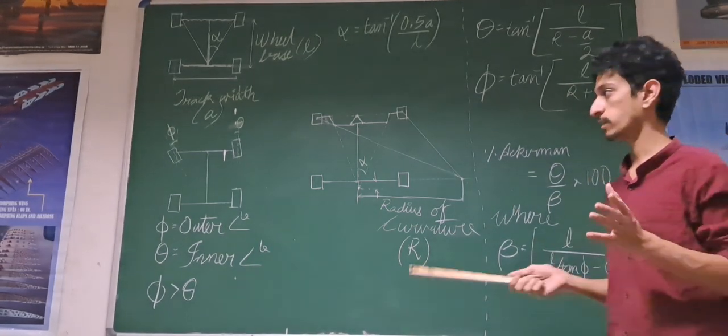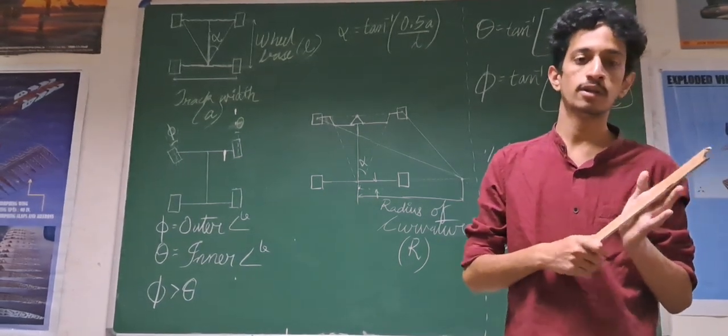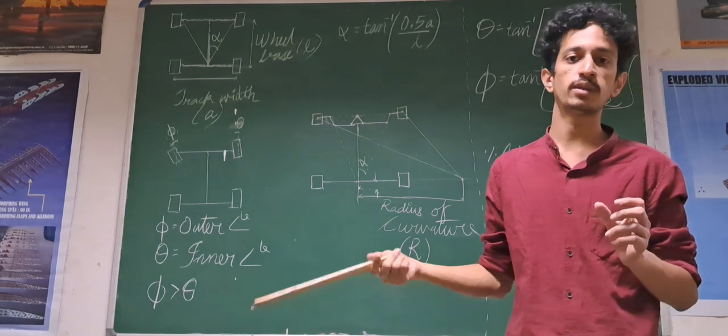To verify our Ackerman geometry of the closeness of how we ideally want our steering system to be, that is the inner wheel turning more than the outer wheel, we consider these formulas where theta is the outer wheel angle and phi is the inner wheel angle.